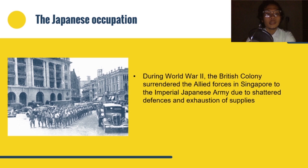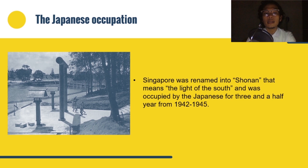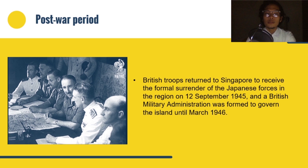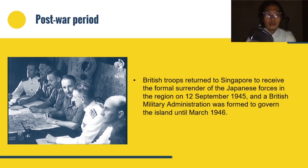Singapore was renamed Shōnan, meaning 'Light of the South,' and was occupied for three and a half years from 1942 to 1945. British troops returned to Singapore to receive the formal surrender of the Japanese forces on September 12, 1945, and a British military administration governed the island until March 1946. However, the failure of Britain to defend Singapore had destroyed its credibility as an infallible ruler in the eyes of Singaporeans, and the decades after the war saw a political awakening and the rise of anti-colonial and nationalist sentiments, epitomized by the slogan 'Merdeka,' meaning independence in Malay.